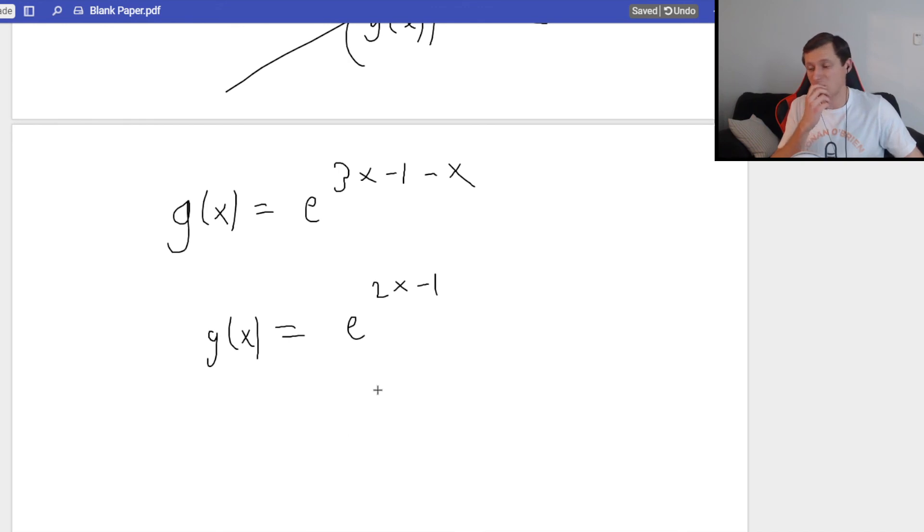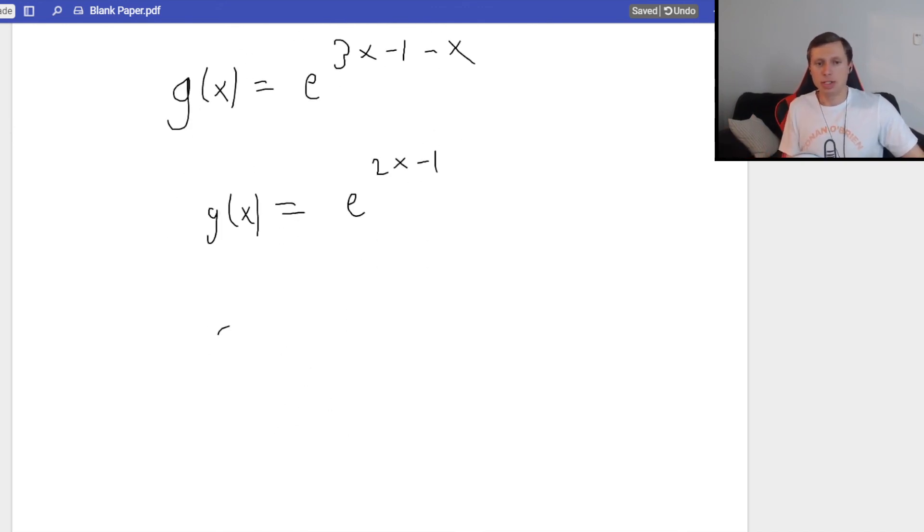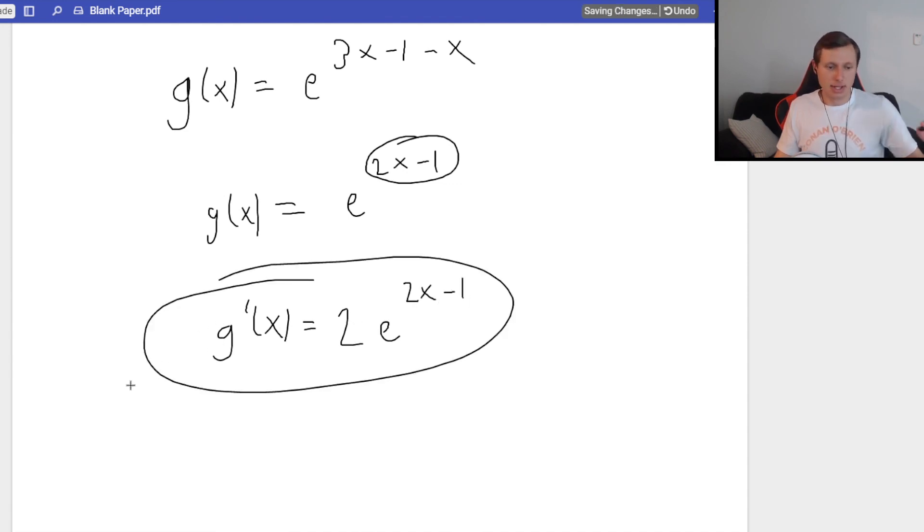So, now g prime of x, we can take the derivative. What's my derivative of my exponent, 2x minus 1? It's just 2. So, 2 times my original, e to the 2x minus 1. There we go. Any questions on that?